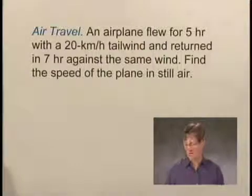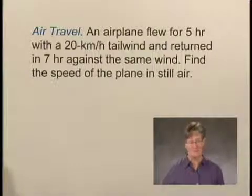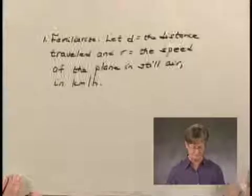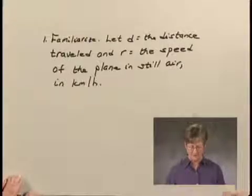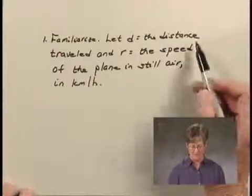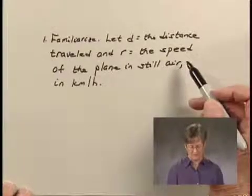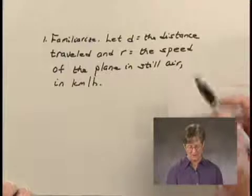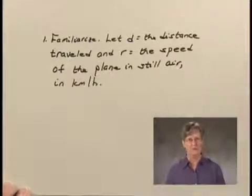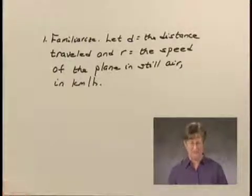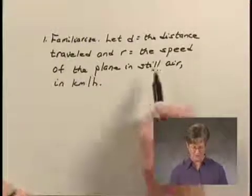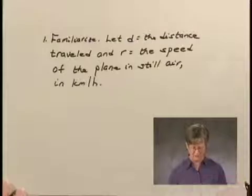We'll use the five-step problem solving process, and first we'll familiarize ourselves with the problem. Let's begin by letting D equal the distance traveled and R equal the speed of the plane in still air. R is in kilometers per hour and D is in kilometers.